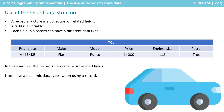In this example, we have a record that we've called tcar containing six related fields. You could call this record whatever you want — don't worry too much about the capital T. It's a standard convention in many languages to start the name for a record with a capital letter T. The important thing is to see that we've mixed and matched six different variables with different data types, collected together under a generic record structure called tcar.